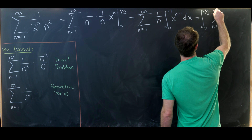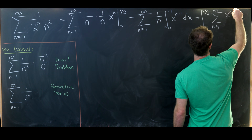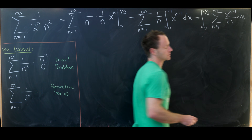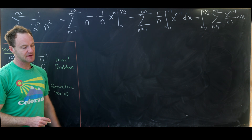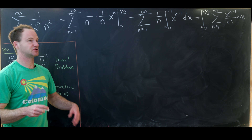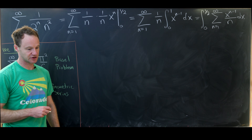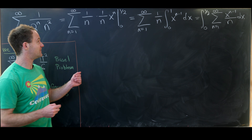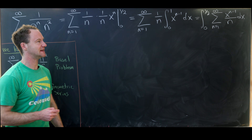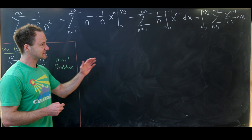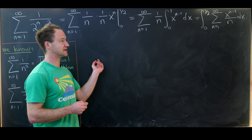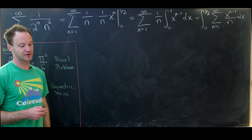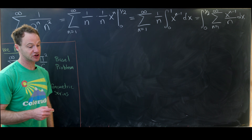That allows us to write this as the integral from 0 to 1 half of the sum as n goes from 1 to infinity of x to the n minus 1 over n dx. Changing the order of summation and integration was effective at removing one of the n's from the denominator, so perhaps we can change this from a single integral to a double integral and remove the other n from the denominator as well.